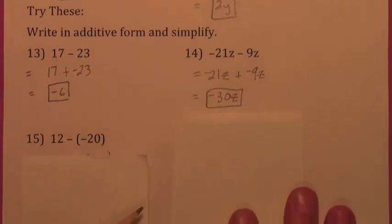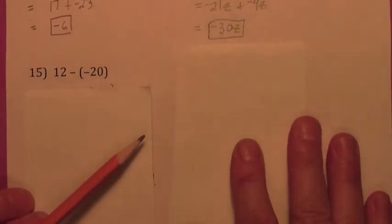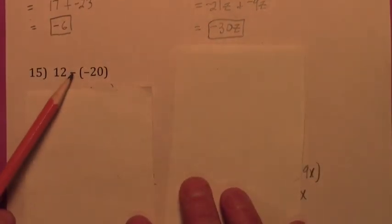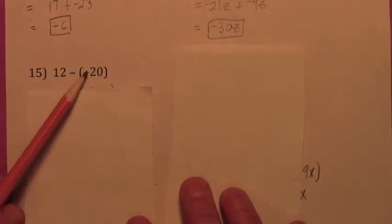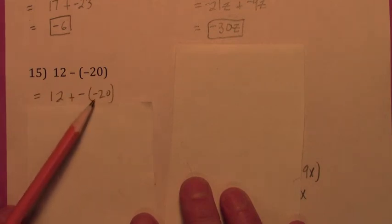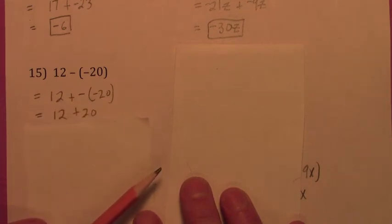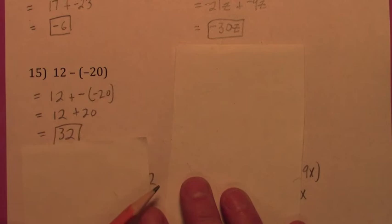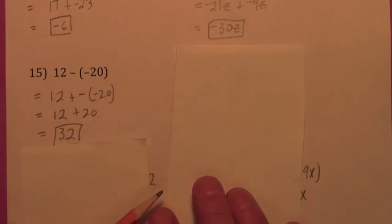How about this one? Remember, this is where it gets sneaky. This minus sign becomes plus and negative — this does not change, it stays negative 20. So you get that as a first step. Get rid of the double negative. So it's just 12 plus 20, which is 32.